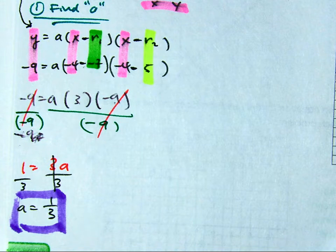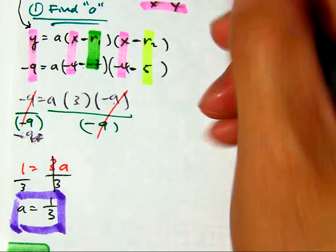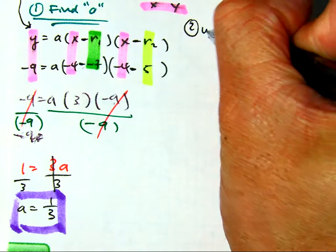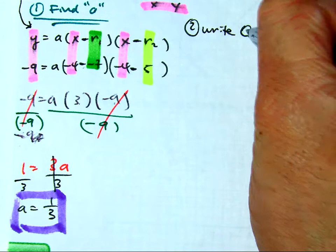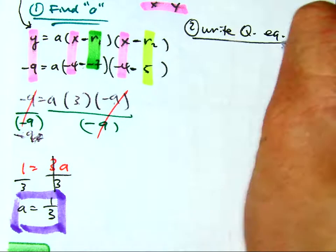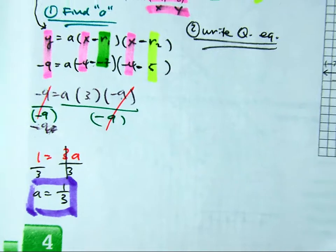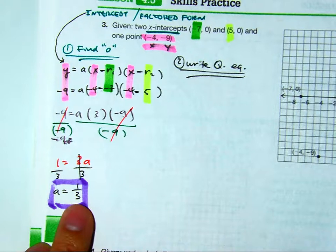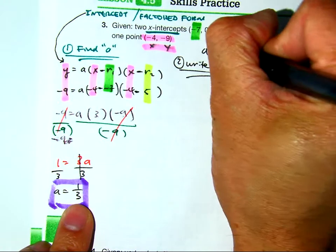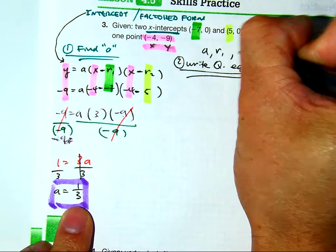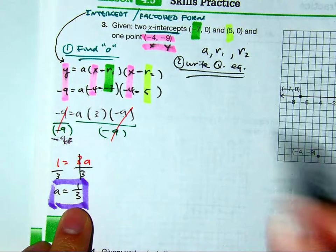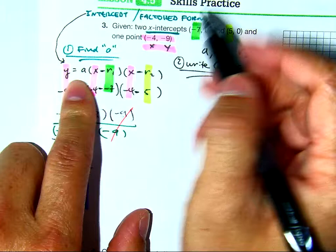Now, when I write my new equation, in this problem, all I need is my a value, r1 value, and my r2 value. So, I'm going to write factored intercept form again.